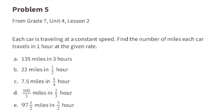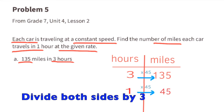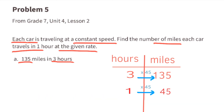Problem number 5 from 7th grade Unit 4 Lesson 2: each car is traveling at a constant speed; find the number of miles each car travels in 1 hour at the given rate. A: this car travels 135 miles in 3 hours. Dividing both values by 3: 135 ÷ 3 equals 45, and 3 ÷ 3 equals 1. So 3 times 45 equals 135, and this car travels 45 miles in 1 hour.